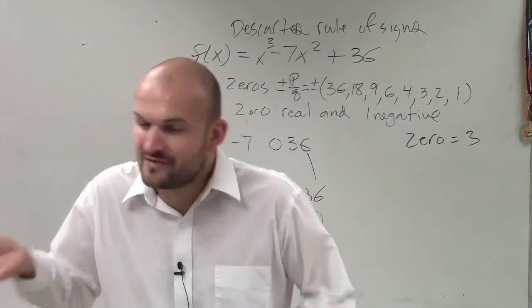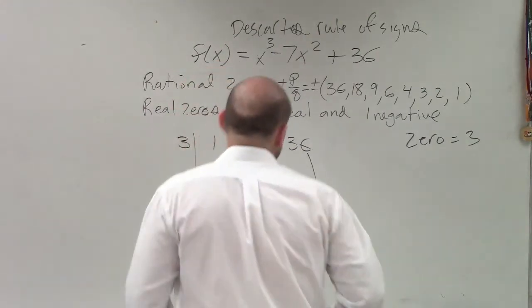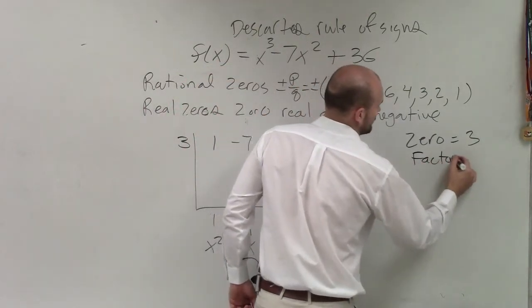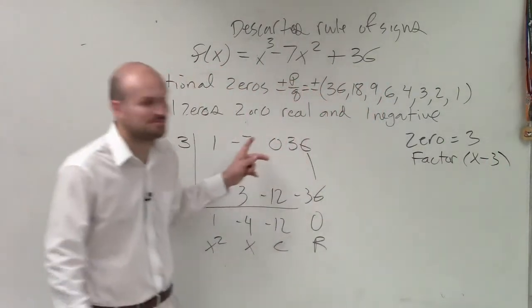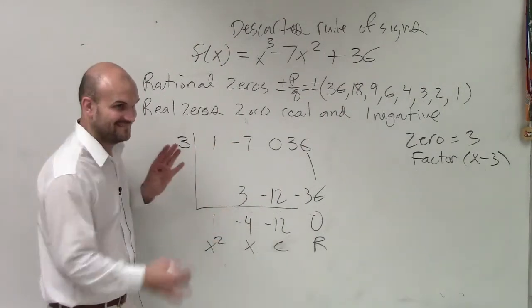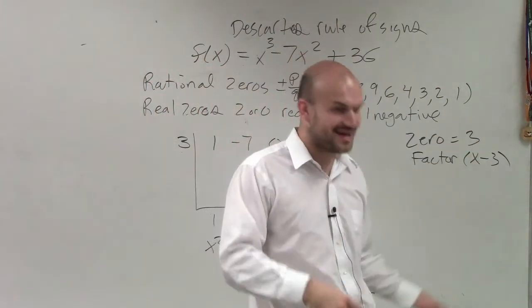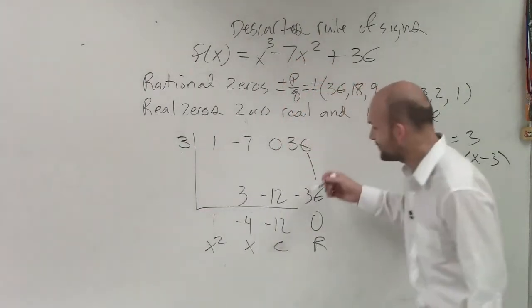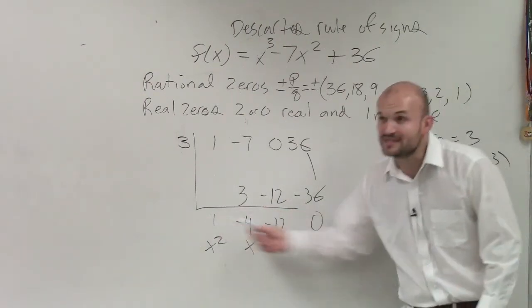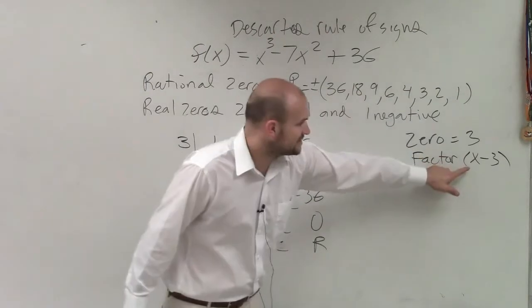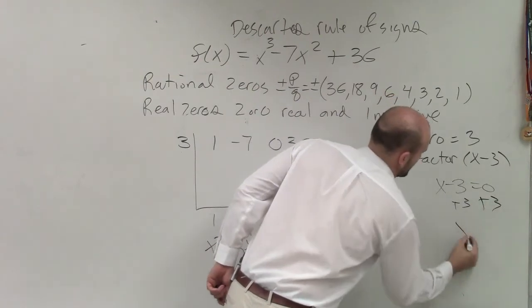Ryan, what would be the factor form of that? If a zero is 3, what's the factor form? X minus 3. Yeah, X minus 3. You take your factor. To get our factor to our zero, what do we do? X minus 3 equals 0. Solve. X equals 3.